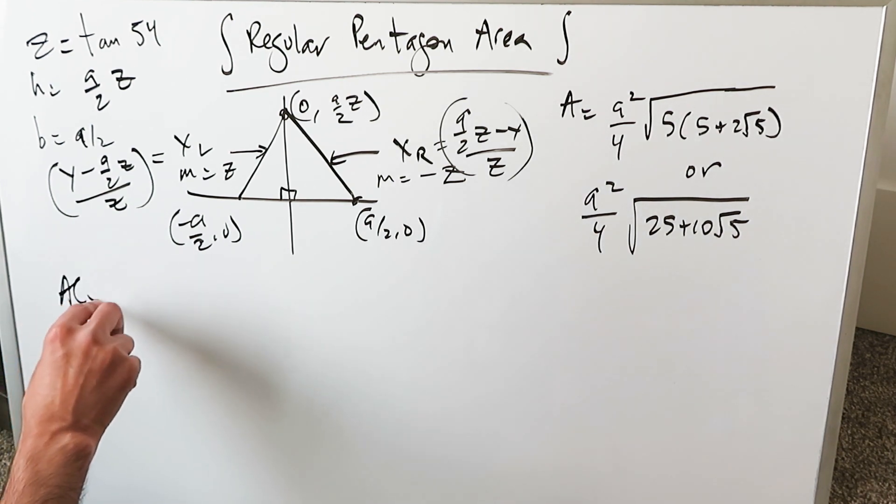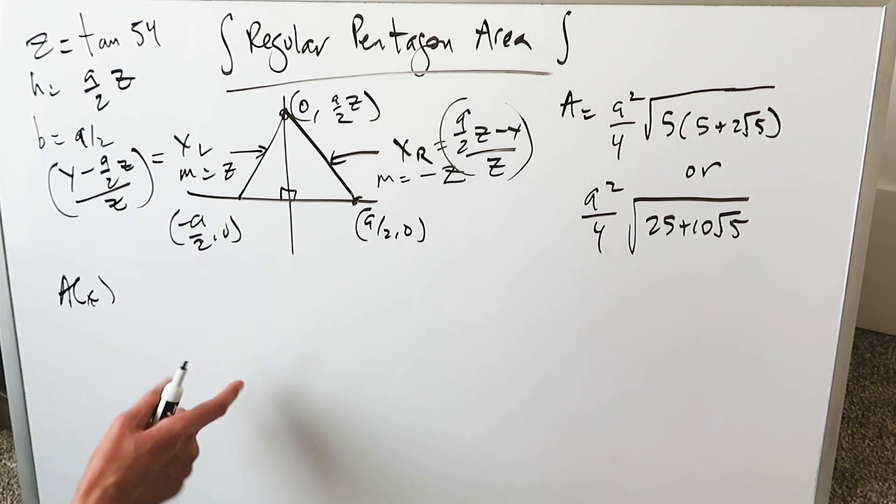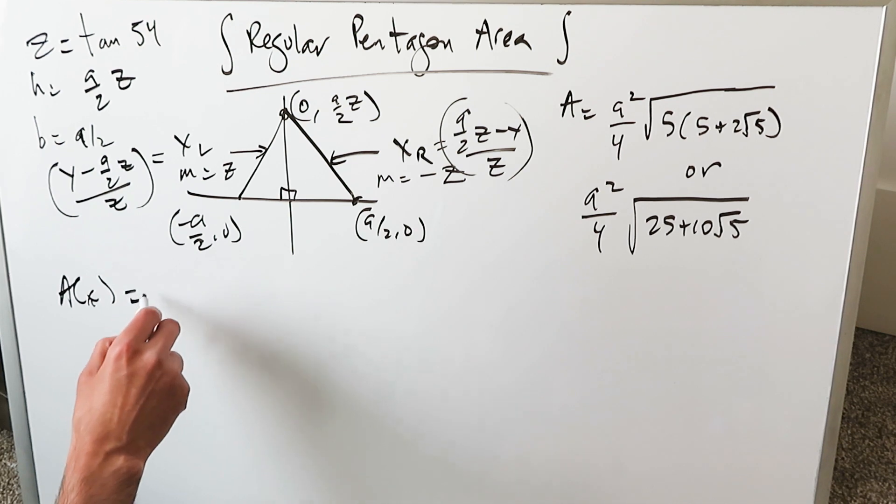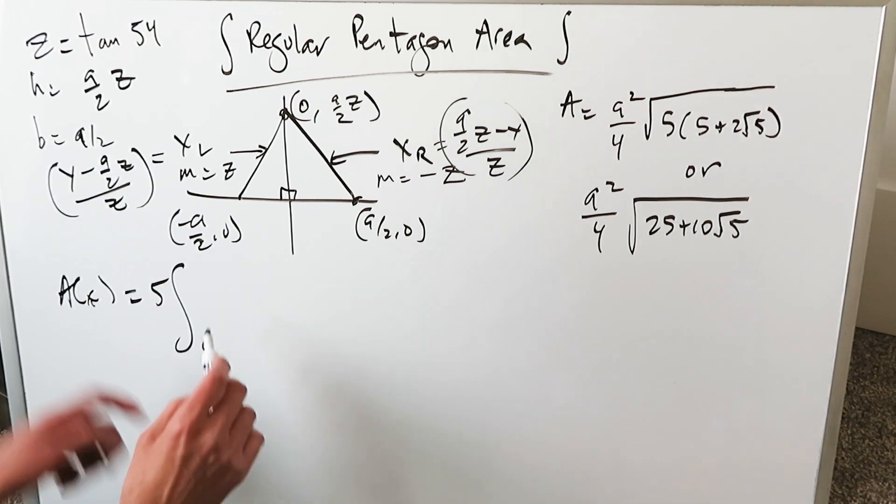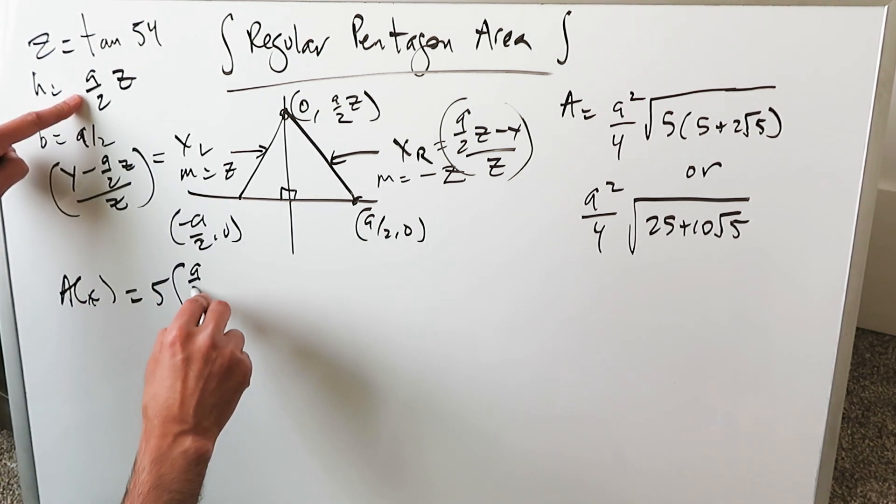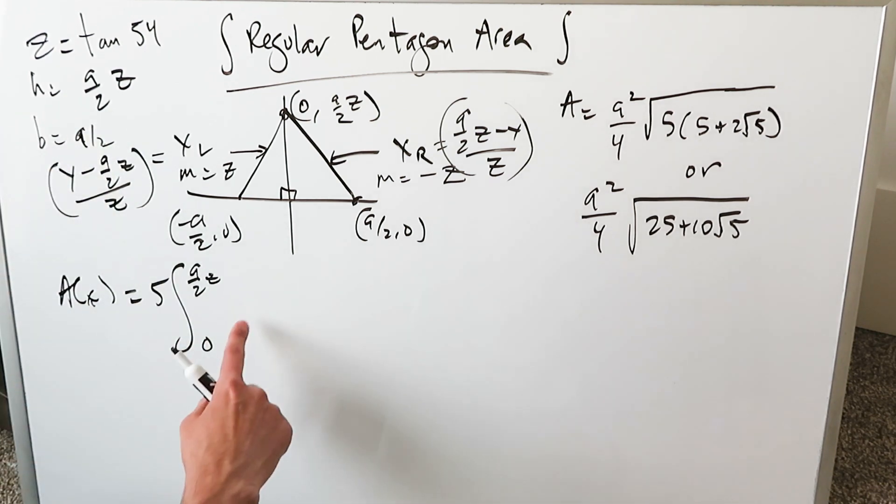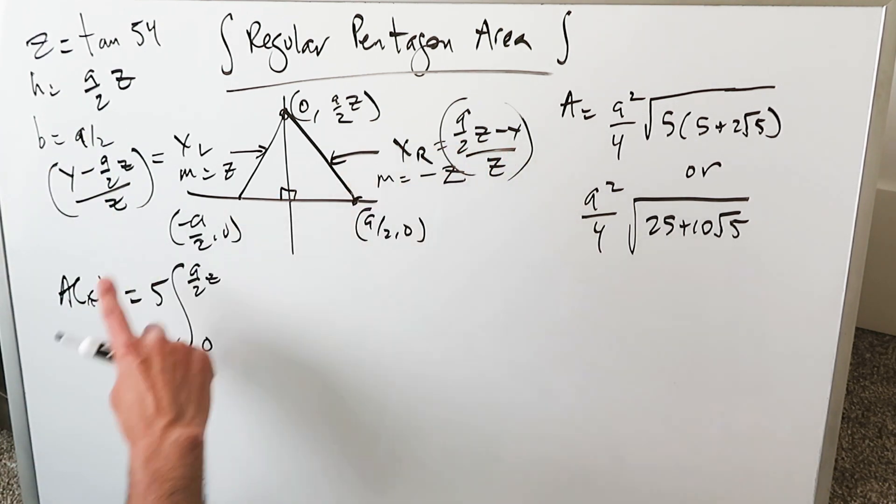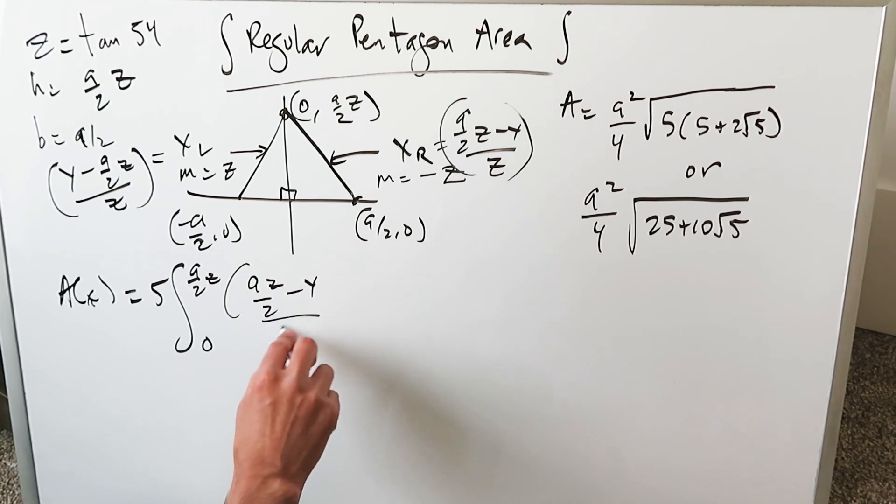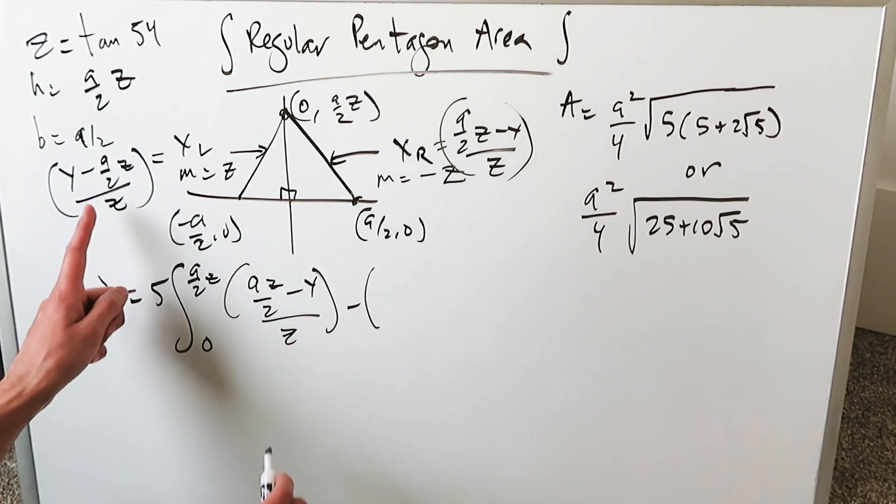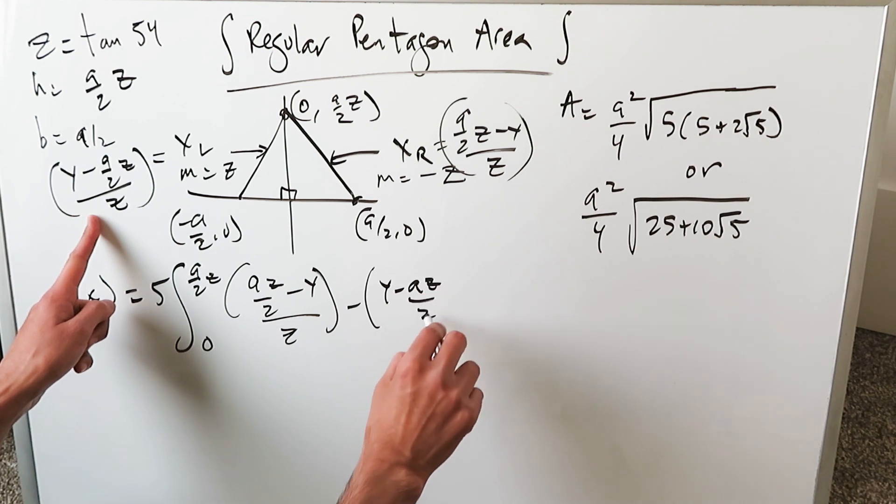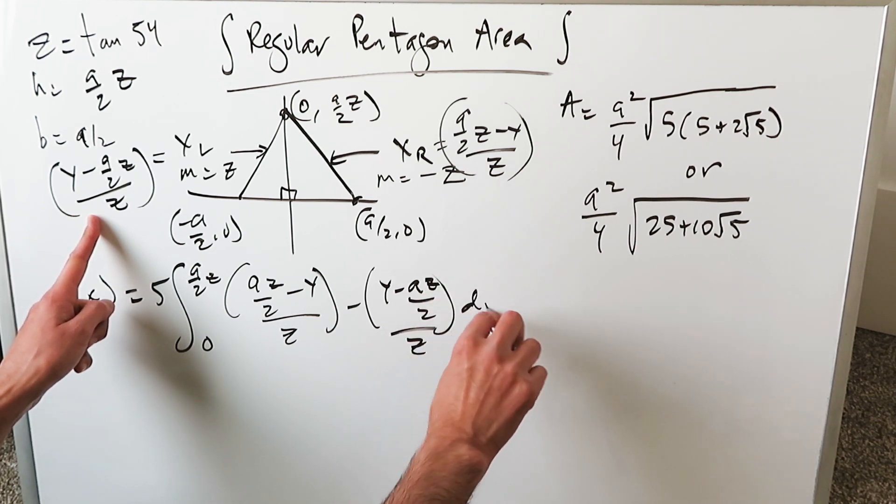Your integral is going to be this. Not for this specific triangle but for all the five triangles that make this pentagon: 5. You're going from 0 up to this height, A over 2 Z, right boundary curve minus left boundary curve, right minus left.